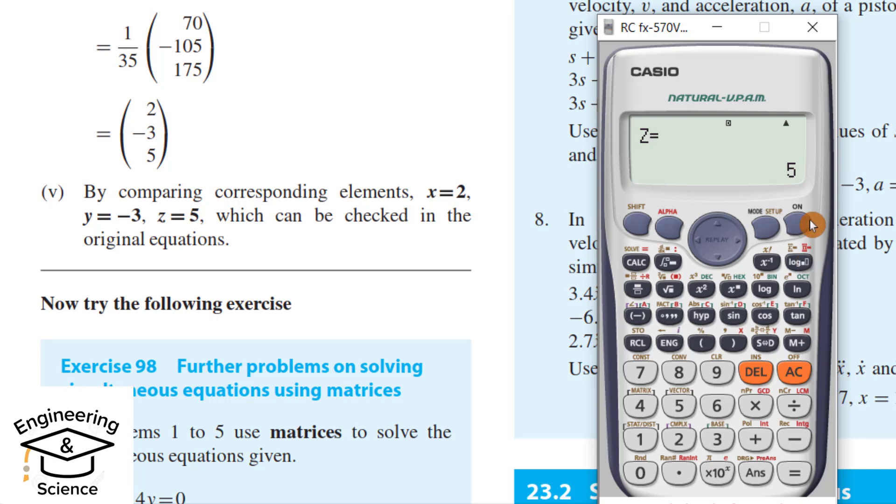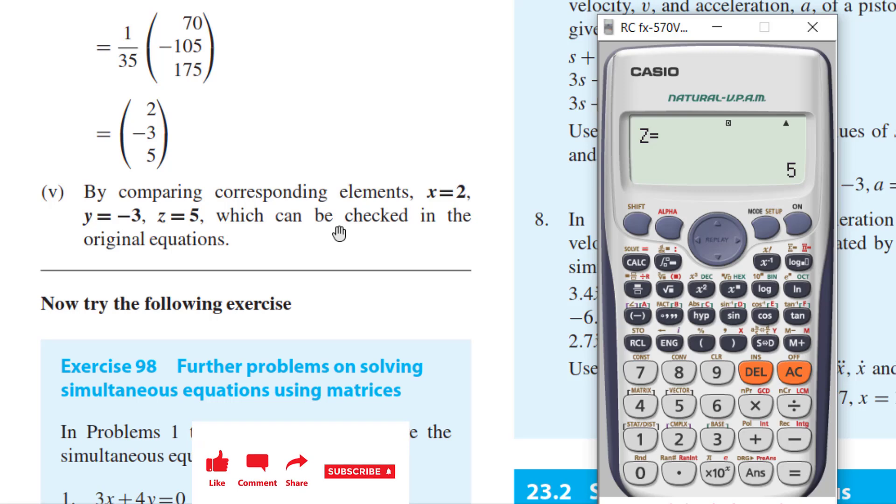And z equal to 5. That is the solution of simultaneous equation by Casio calculator. See you in the fourth tutorial about another technique.